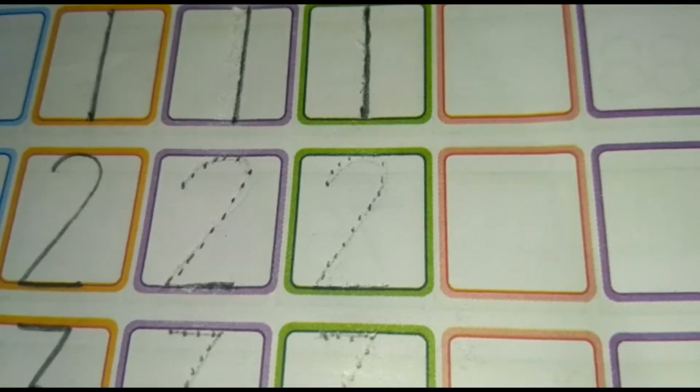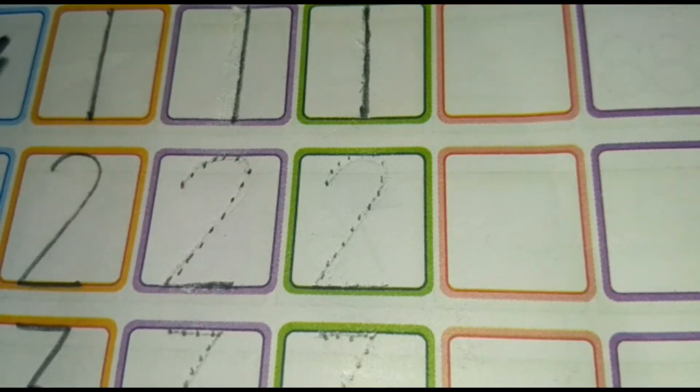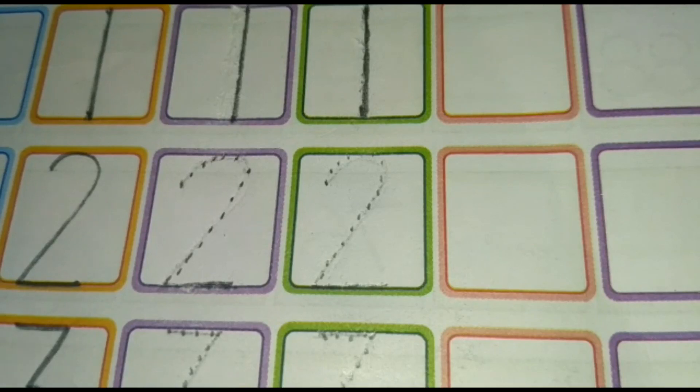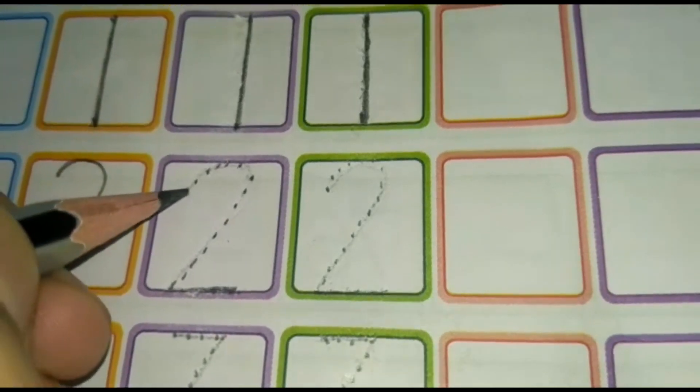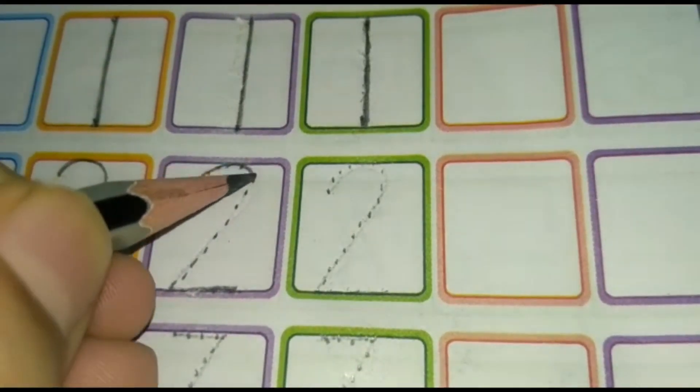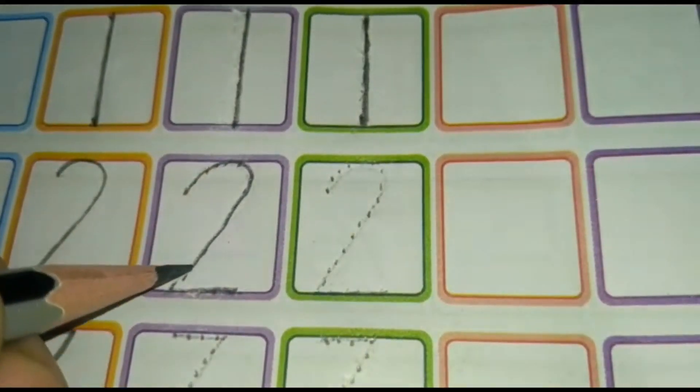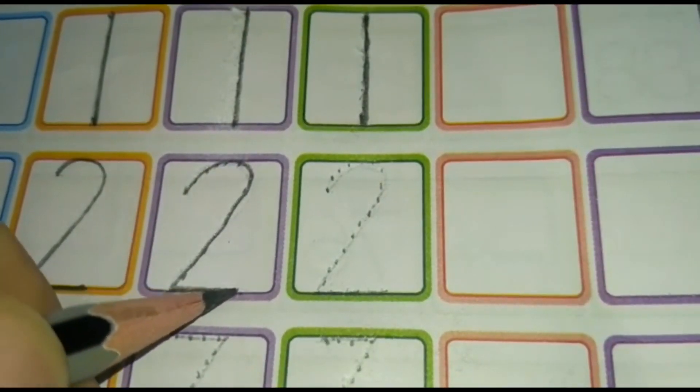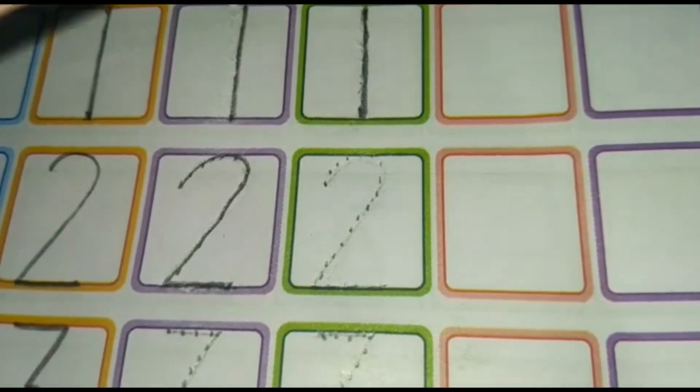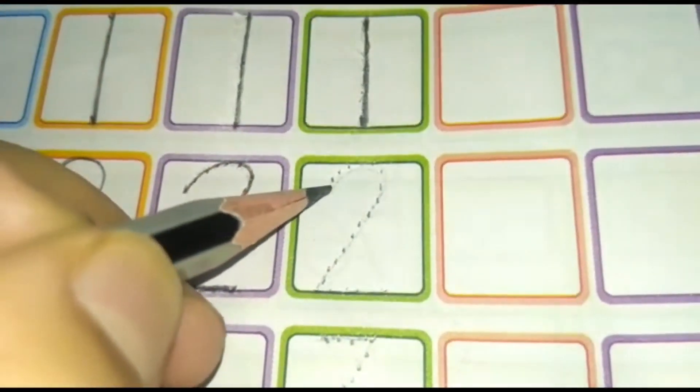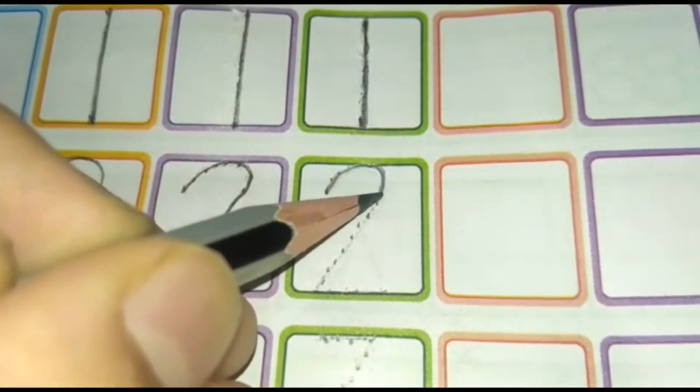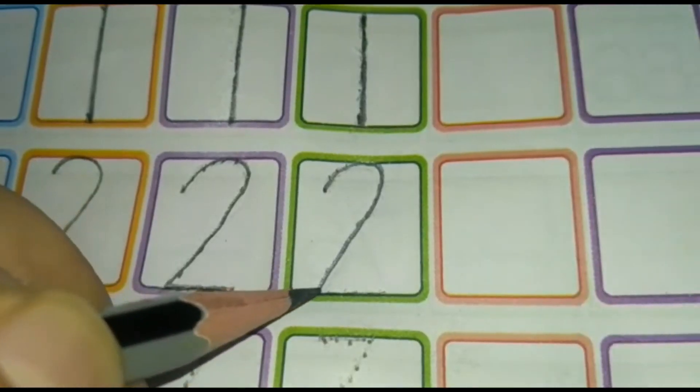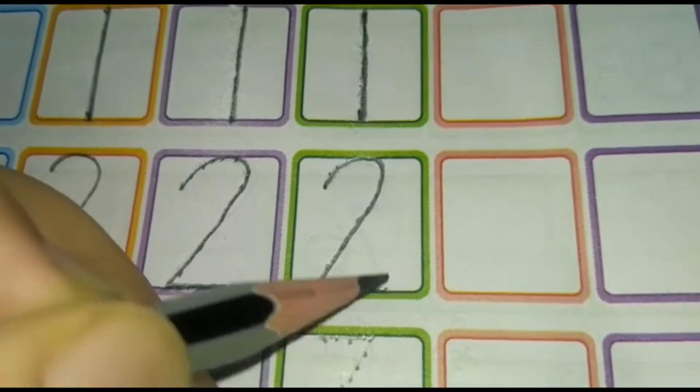Let's move on to the next number. What comes after number one? Number two. Yes, you are absolutely right. A curved line then a sleeping line joining all the dots makes the number two. Let's do it again. A curved line then a sleeping line joining all the dots makes the number two.